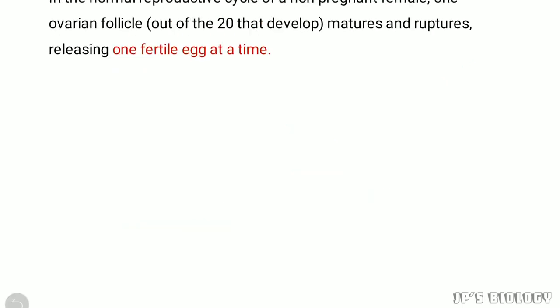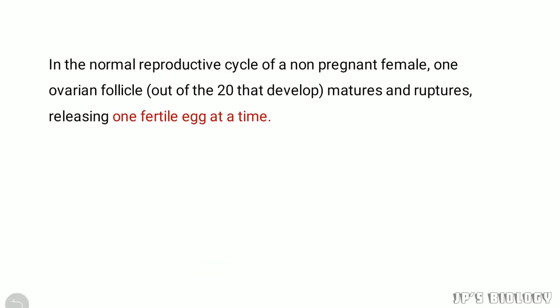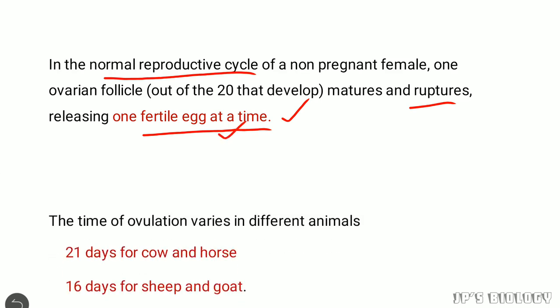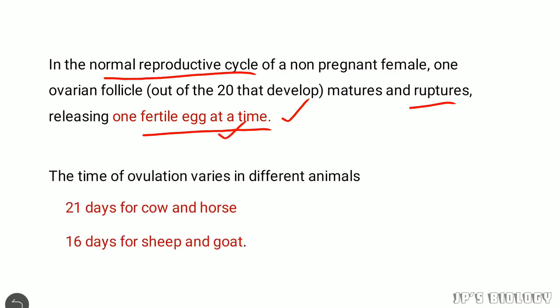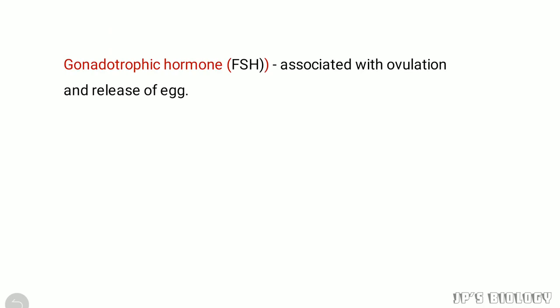In general, in the normal reproductive cycle of a non-pregnant female, one ovarian follicle out of the 20 that develop matures and ruptures, releasing one fertile egg at a time. The time of ovulation varies: it is 21 days for cow and horse, and 16 days for sheep and goat.